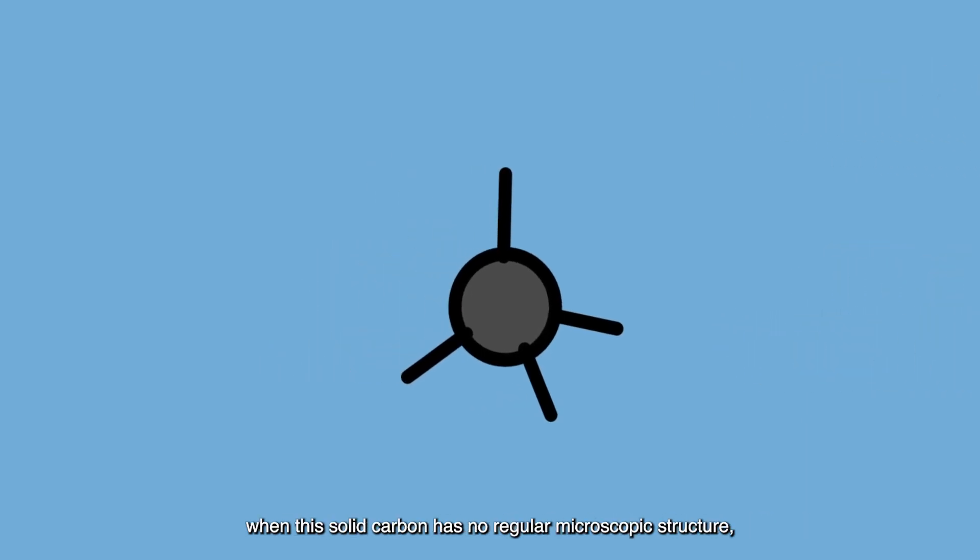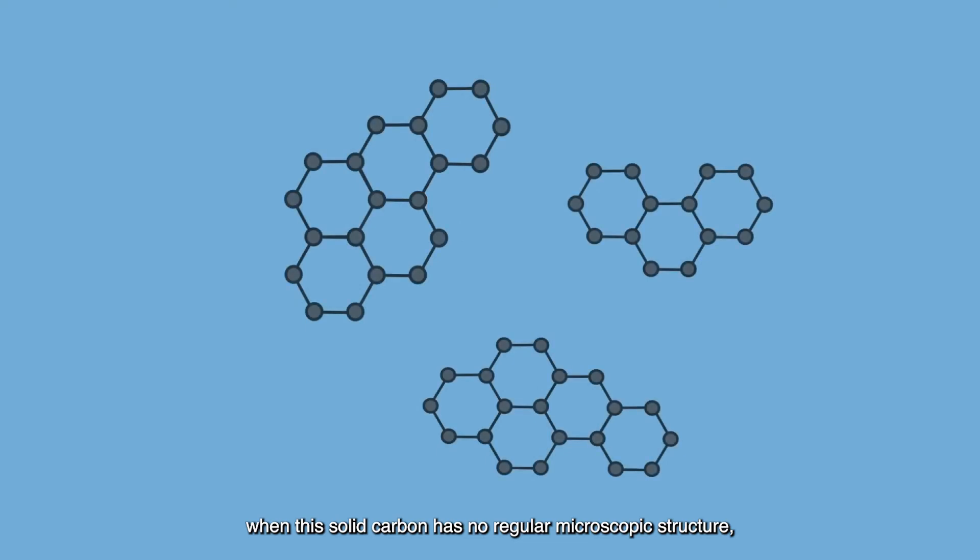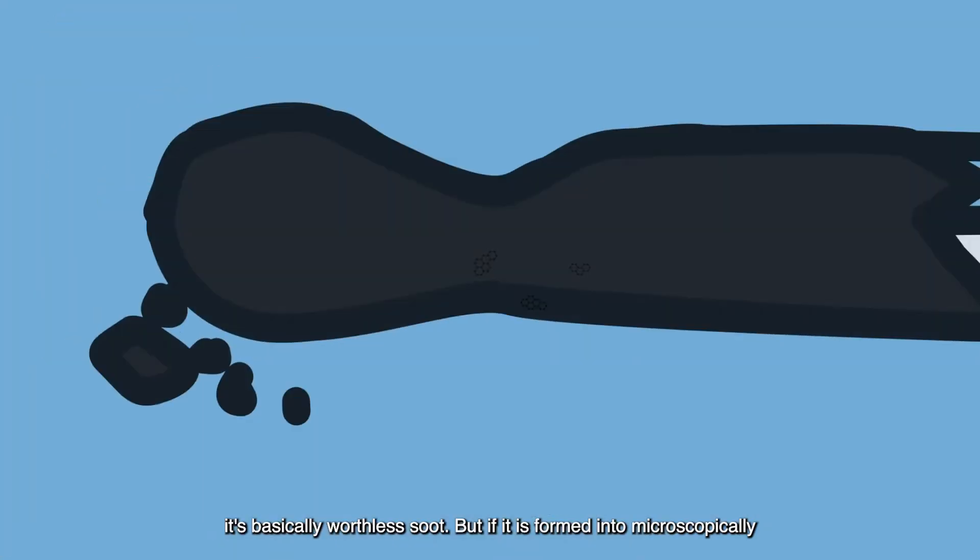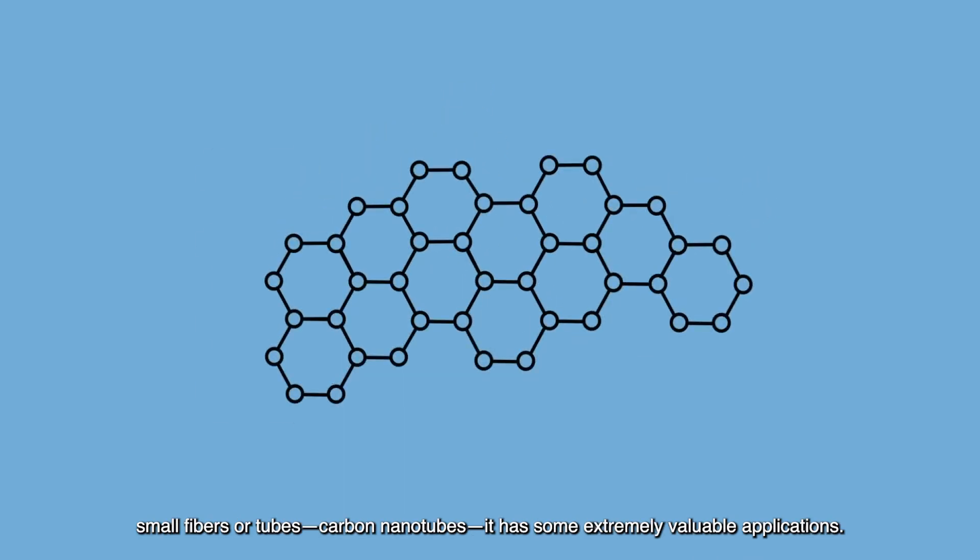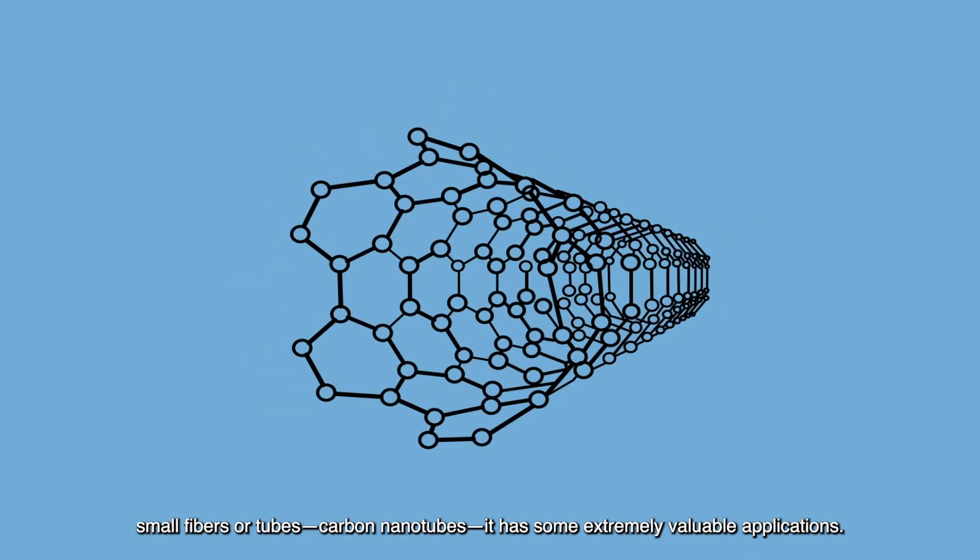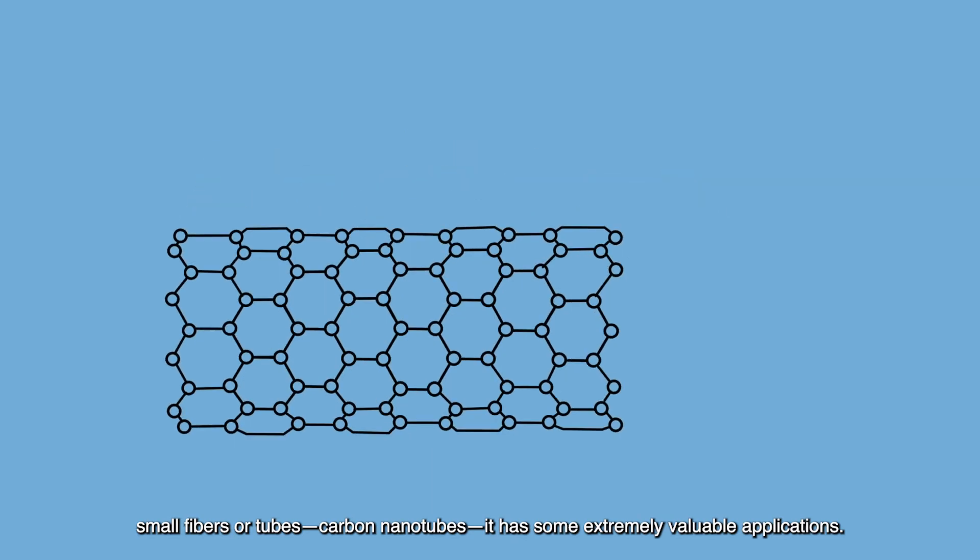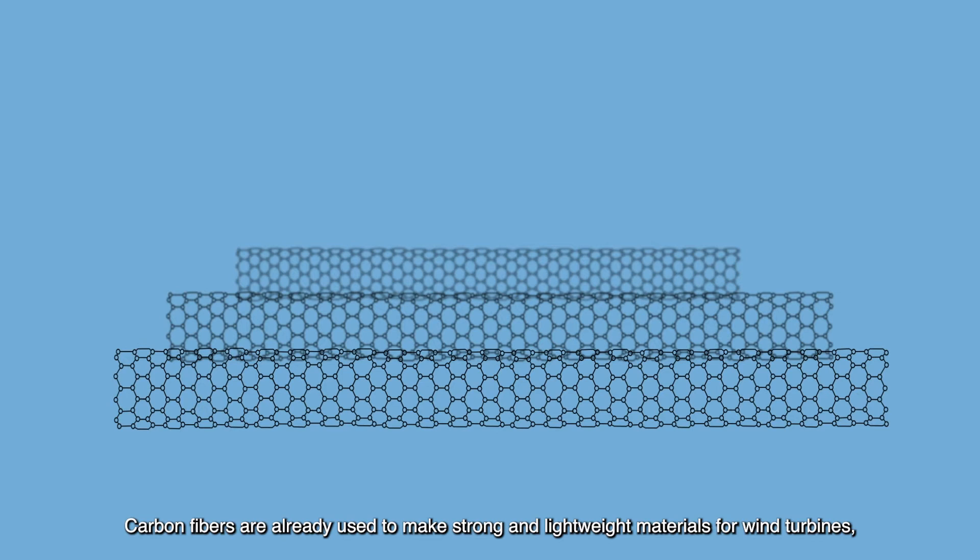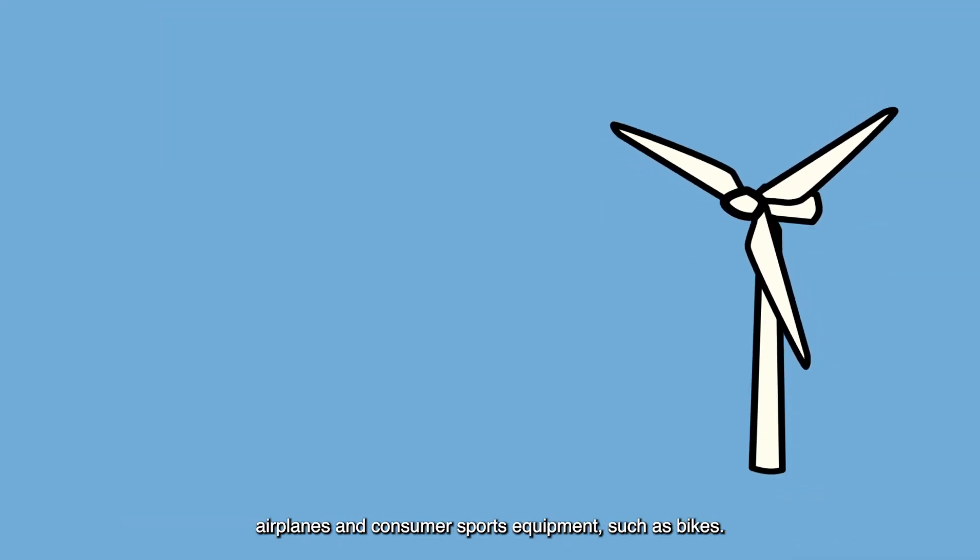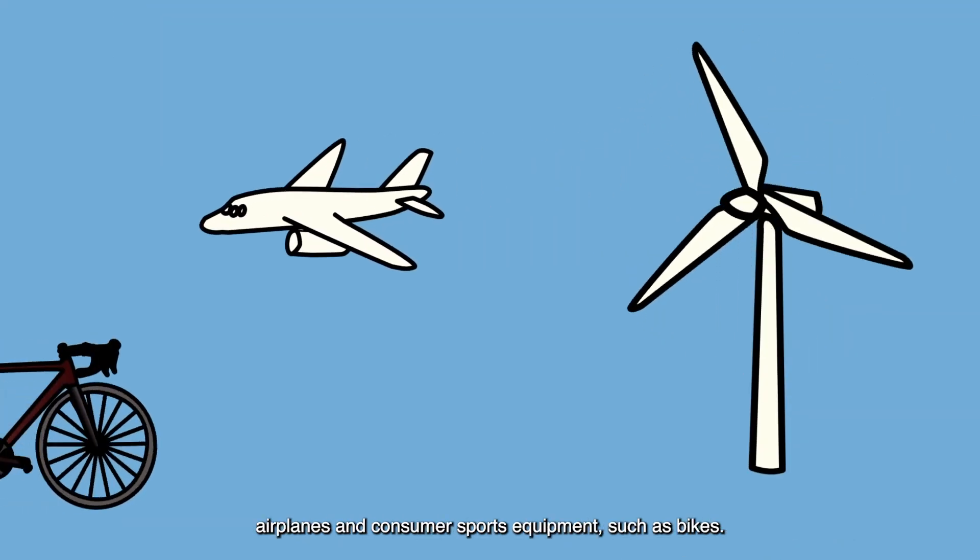When this solid carbon has no regular microscopic structure, it's basically worthless soot. But if it's formed into microscopically small fibers or tubes, carbon nanotubes, it has some extremely valuable applications. Carbon fibers are already used to make strong and lightweight materials for wind turbines, airplanes, and consumer sports equipment, such as bikes.